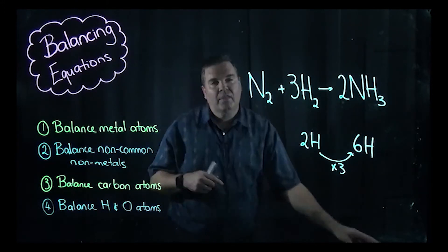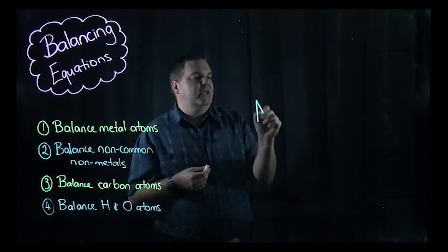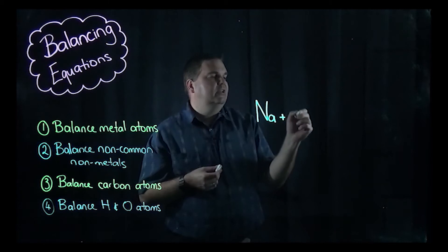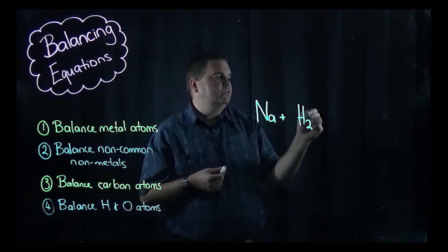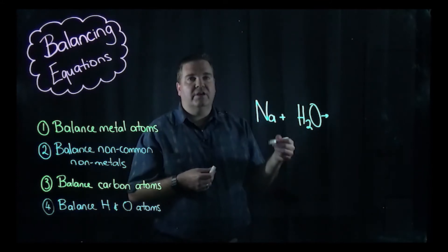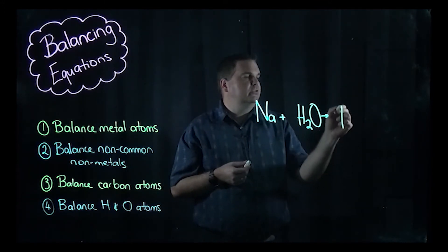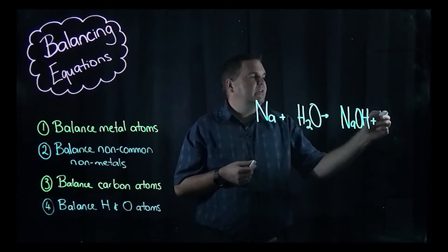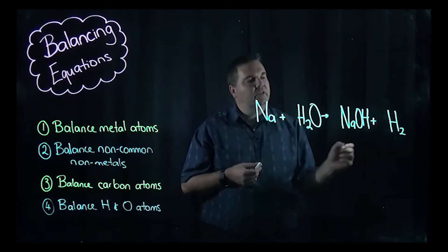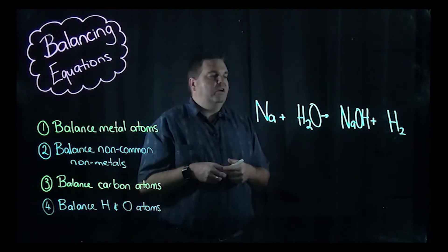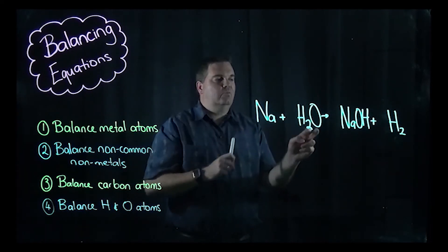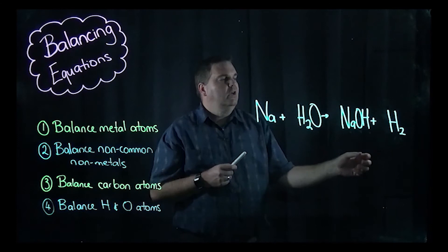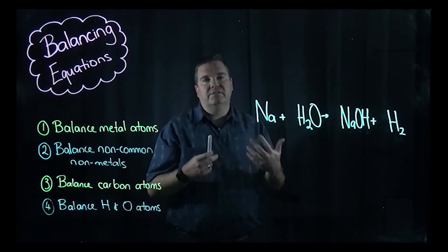Next equation: sodium metal (Na) reacting with water (H2O) to give sodium hydroxide (NaOH) and hydrogen gas (H2). Leave a gap in front of each species. You can see straight away: one sodium, two hydrogens, one oxygen on the left; one sodium, one oxygen, one hydrogen plus two hydrogens on the right — giving three hydrogens. So this is not a balanced equation.